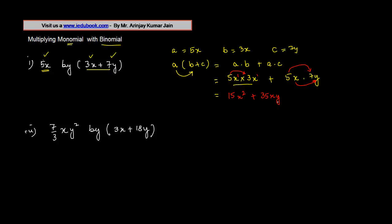Plus again here, 5 into 7 is 35, x into y is xy. So this is basically your answer. Similarly, in this case also, if you notice you have a, you have b, you have c.